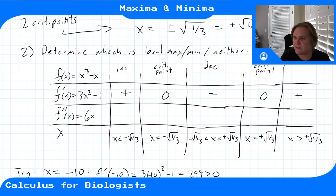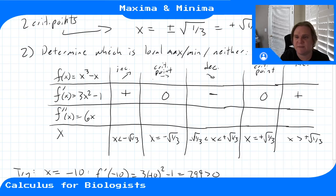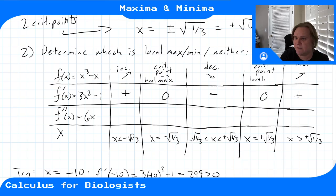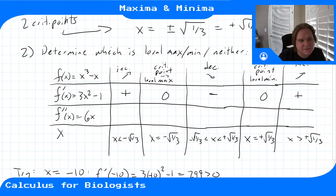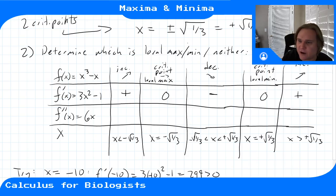We went from increasing to flat to decreasing, so x = -√(1/3) is a local max. We went from decreasing to increasing, so x = +√(1/3) is a local min. It's often the case with a pair of critical points that one is a max and one is a min, though that's not always guaranteed for every function.